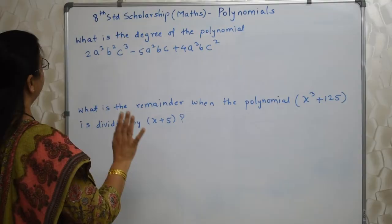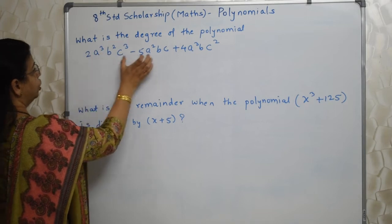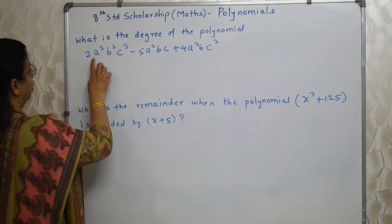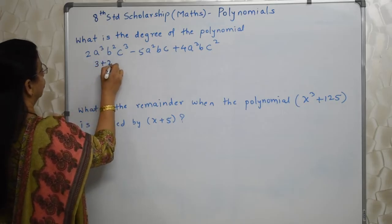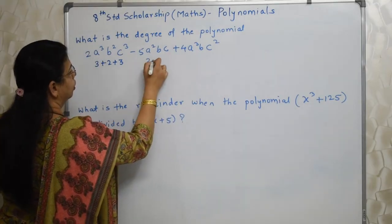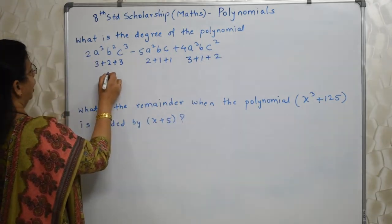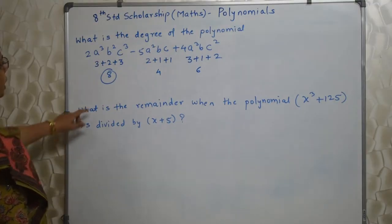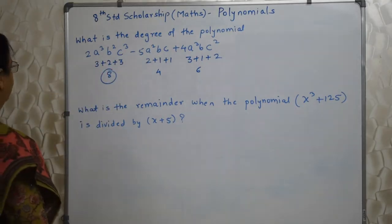This is the polynomial they have given. Whenever they ask you the degree of any polynomial, what you are supposed to do is add the index of each term, and whichever is the highest — that is the degree of that polynomial. For example, here we have variables a, b, and c. So a raised to 3, b raised to 2, and c raised to 3 — the sum is 8. The other terms give 4 and 6. The highest is 8, so 8 is the degree of this polynomial. No need to waste time — looking at it only, we can tell which is highest.